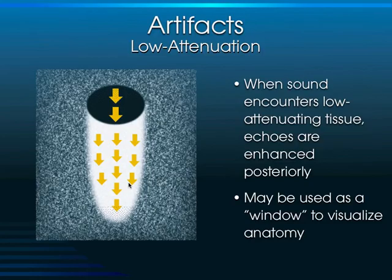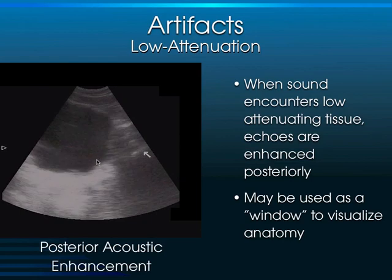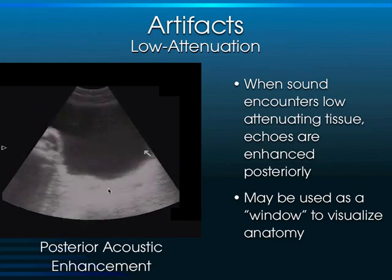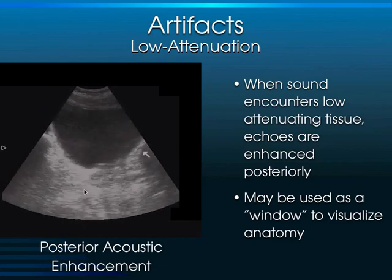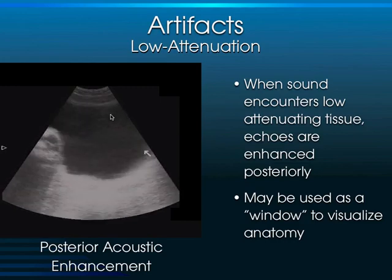Regarding artifacts: the low-attenuating artifact occurs with fluid structures like the bladder — everything behind the bladder appears hyperechoic, so you may need to turn down the far-field gain to compensate. Here we can see the bladder, with the overgained hyperechoic material behind it due to the bladder being a low-attenuating structure.